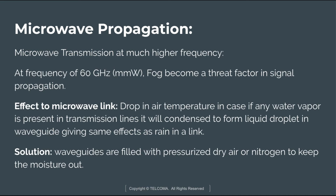Microwave transmission at much higher frequencies, such as 60 GHz millimeter waves, faces additional challenges. Fog becomes a significant threat factor in signal propagation. A drop in air temperature can cause water vapor present in the air or transmission line to condense into liquid droplets, which act like raindrops and attenuate signals or rotate signal polarization. The solution is to pressurize the waveguide with dry air or nitrogen to keep moisture out.